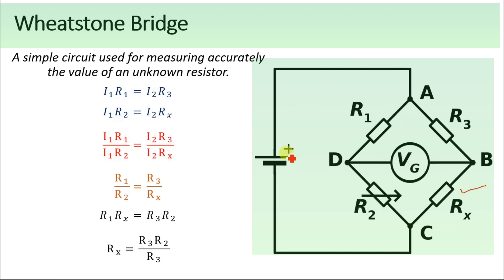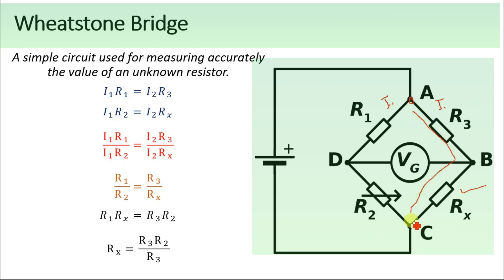When this circuit is connected to a battery, the electrons — the negatively charged particles — will flow through point A. At point A the current will divide into two: I1 and I2. I1 will pass through resistor R1, then reach point D, and then pass through the variable resistor R2 and reach here. I2, the second current, will follow the other path.